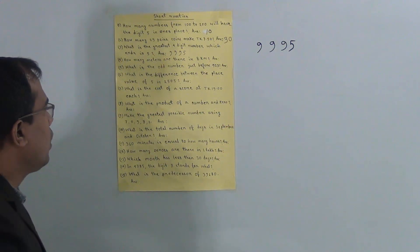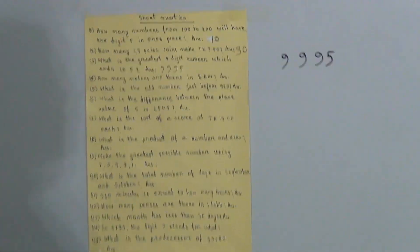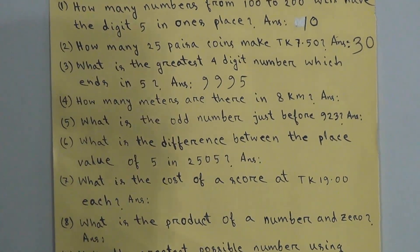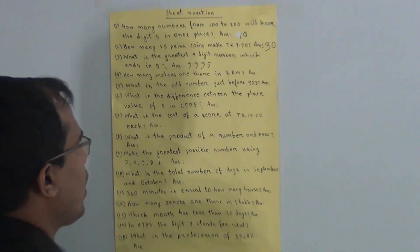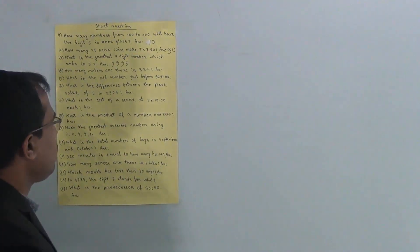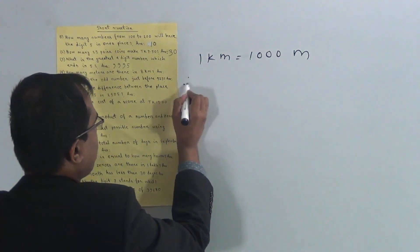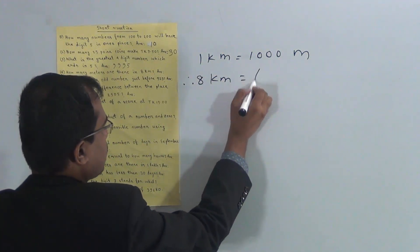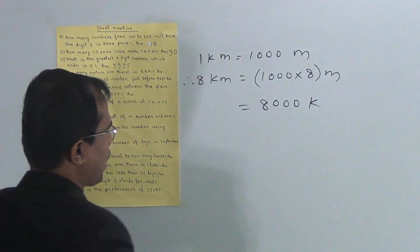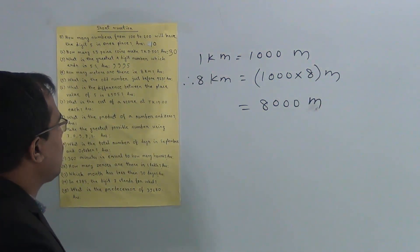Question 4: how many meters are there in 8 kilometers? We know that 1 kilometer is equal to 1000 meters. Therefore, 8 kilometers is equal to 8 × 1000 = 8000 meters. The answer is 8000 meters.